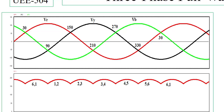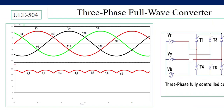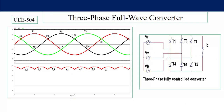Six pulses of output voltage are obtained in a complete 360 degrees. Every thyristor conducts for 120 degrees and a pair operates for 60 degrees; after 60 degrees a new thyristor is turned on and the earlier one is commutated due to reverse voltage appearing across it. After 90 degrees Vy is more than Vb, so the favorable condition appears for thyristor 2 — T6 turns off and T2 turns on — and thus the six-pulse output voltage continues across load resistance R.